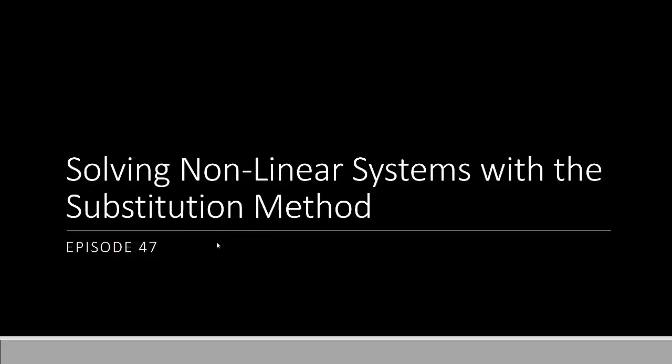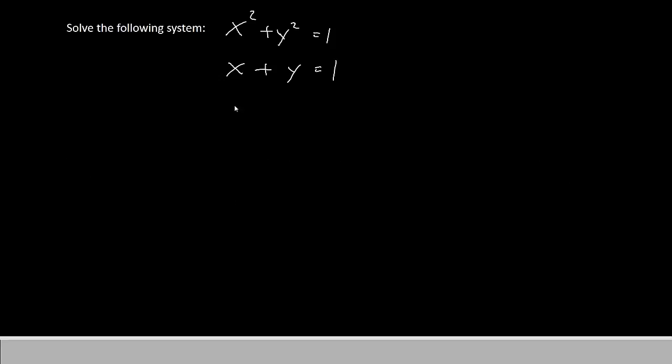Let's have a look at it. Our system this time says x squared plus y squared equals 1 and x plus y equals 1. Notice that you have second power equations in the first line and first power equations in the second line.